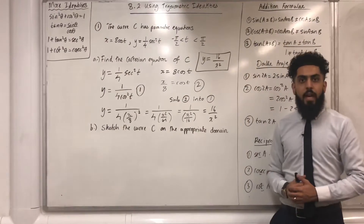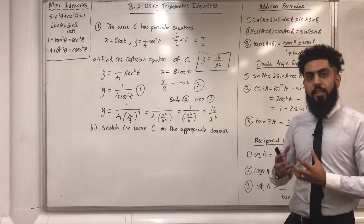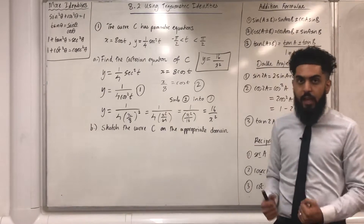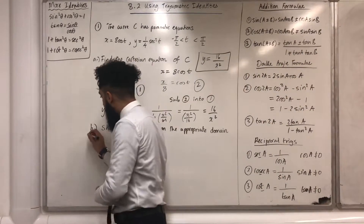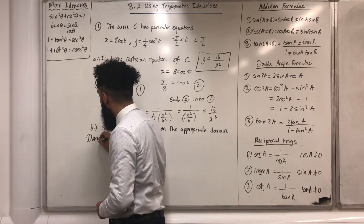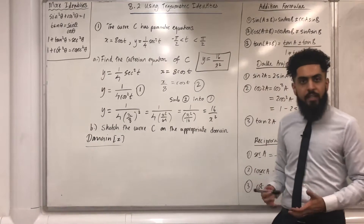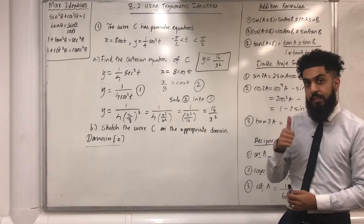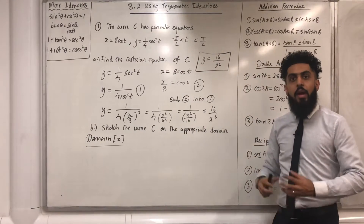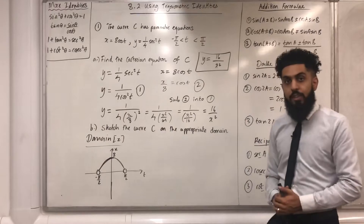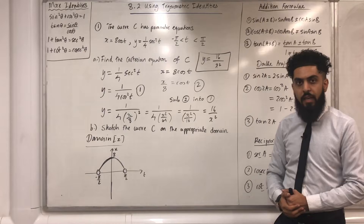Let's have a look at part b now. It says sketch the curve C on the appropriate domain. The domain of the curve C is just the set of possible values of x that the curve C takes — so in general, the domain represents x. My very first step is to sketch x against t, for t is more than minus π/2 and less than π/2. Here is my graph of x equals 8cos(t) for that interval.